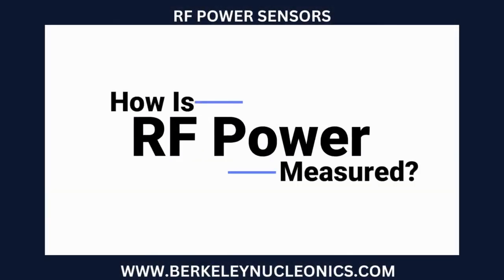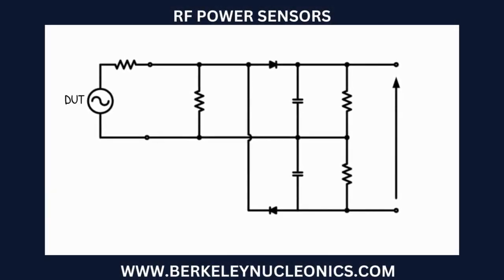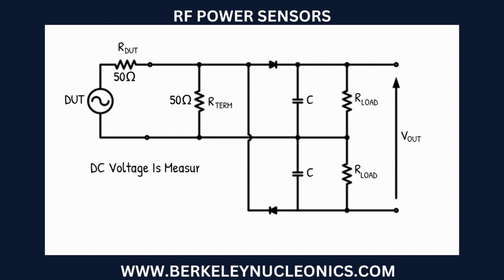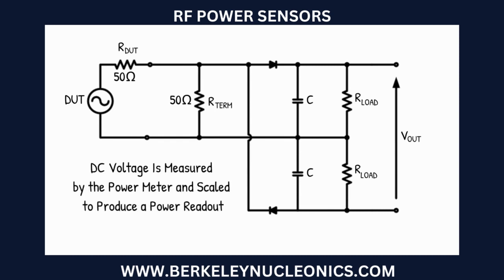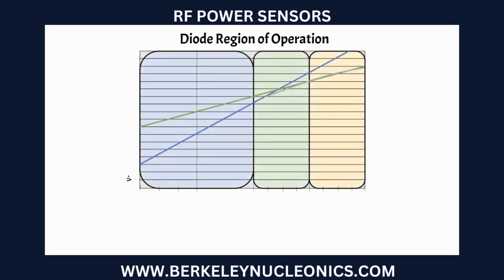How is RF power measured? High frequency diodes detect the RF voltage developed across a terminating load resistor. The diodes directly perform an AC to DC conversion, and the DC voltage is measured by the power meter and scaled to produce a power readout. The relation of the DC voltage to the power measured is dependent on the diode region of operation.